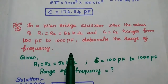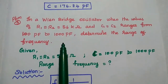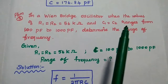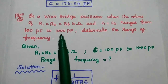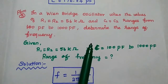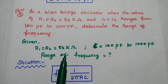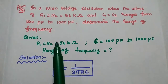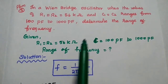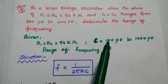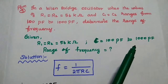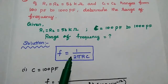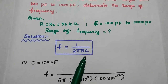Next problem: in a Wien Bridge oscillator, when R1 equals R2 equals 56 kilo ohm and C1 equals C2 ranges from 100 picofarad to 1000 picofarad, determine the range of frequency. The given data is R equals 56 kilo ohm, and C varies from 100 picofarad to 1000 picofarad. We use the formula f equals 1 by 2 pi RC.